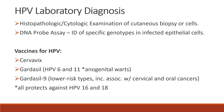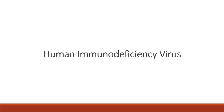For laboratory diagnosis, we can have histopathologic or cytologic examination of cutaneous biopsy or cells. We can also have a DNA probe assay, which provides identification of specific genotypes in infected epithelial cells. The following vaccines protect against human papillomavirus: Cervarix, Gardasil — which also protects against HPV 6 and 11 associated with anogenital warts — and Gardasil 9, which protects against lower risk types associated with cervical and oral cancers. All of these vaccines protect against HPV 16 and 18.